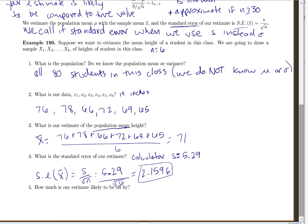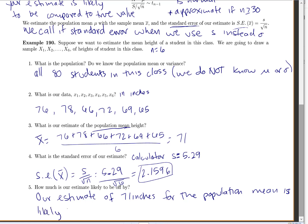Remember, our standard error tells us how close we're likely to be. We could say our estimate of 71 inches for the population mean is likely to be within about 2.1596 inches of the true average. We don't know exactly what it is — we're estimating 71 inches — and we know we're likely to be within about 2 inches of the true average.